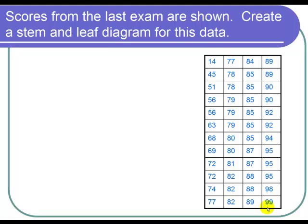To create a stem and leaf diagram we want to first choose what the stems and what are the leaves. Since we have two digit numbers I'm going to select my stems to be the tens digit and the leaves to be the ones digit.